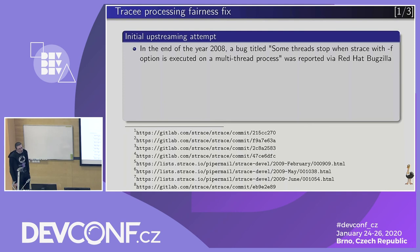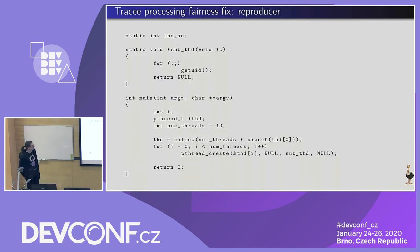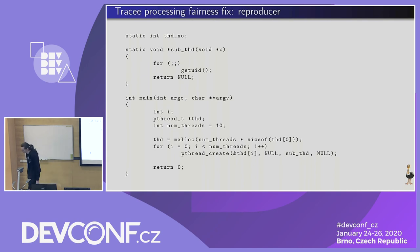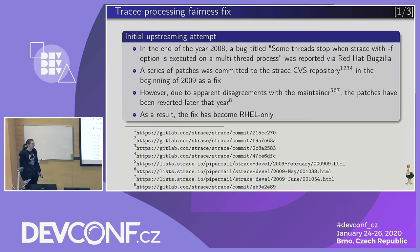Not all fixes are straightforward. There was a bug opened by Red Hat partners that some threads stop when the -f (fork-follow) option is executed on a multi-threaded process. The reproducer is simple: a main process spawns 10 threads, and each thread runs a cheap syscall like getpid. The problem is that after spawning three or four threads, it just stops doing so and virtually hangs. As it turns out, it was a scheduling fairness issue.